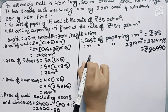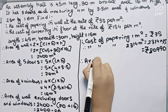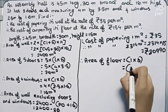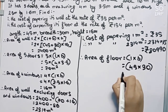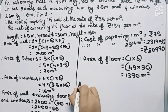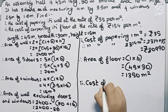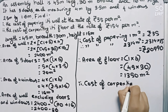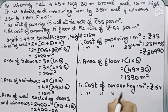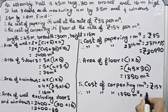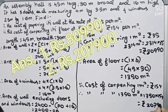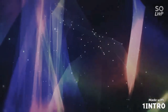Now we have to find the area of the floor. Therefore, area of floor equals length into breadth, which is 45 into 30, and it becomes 1350 meter square. Now I have to find the cost of carpeting. For 1 meter square it is Rs 154. Therefore, cost of carpeting 1350 meter square becomes 1350 into 154, which equals Rs 207,900. So this is our final answer.